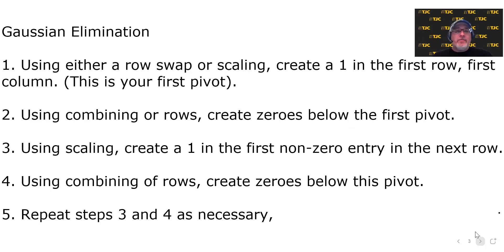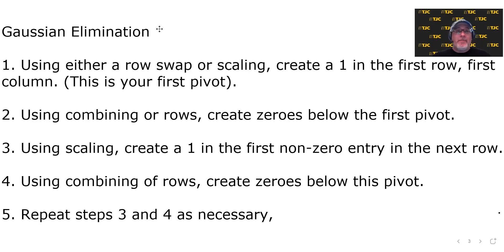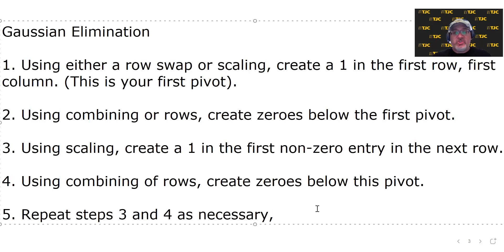Number three: using scaling, create a one in the first non-zero entry in the next row. Number four: using combining of rows, create zeros below this pivot. And the fifth step is to repeat steps three and four as necessary until you've achieved row echelon form.